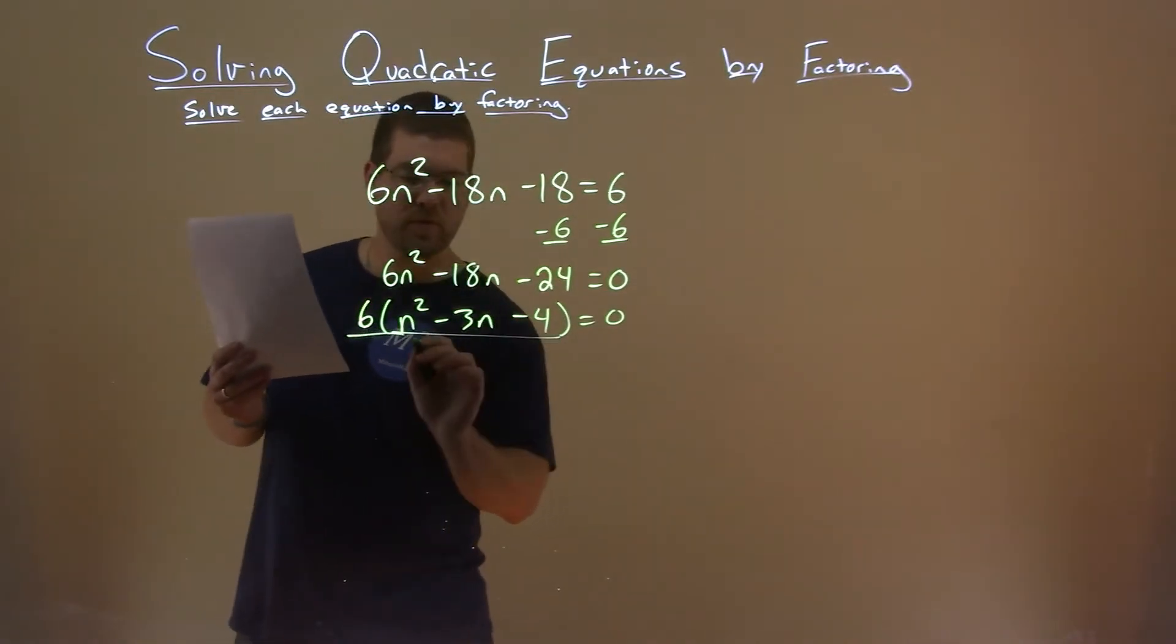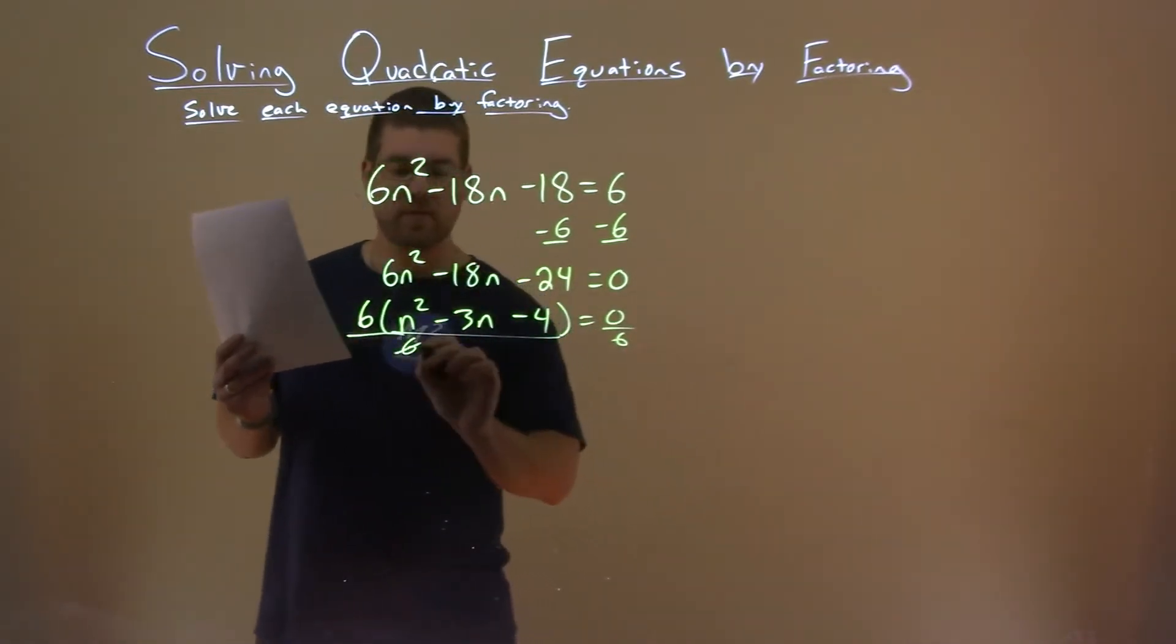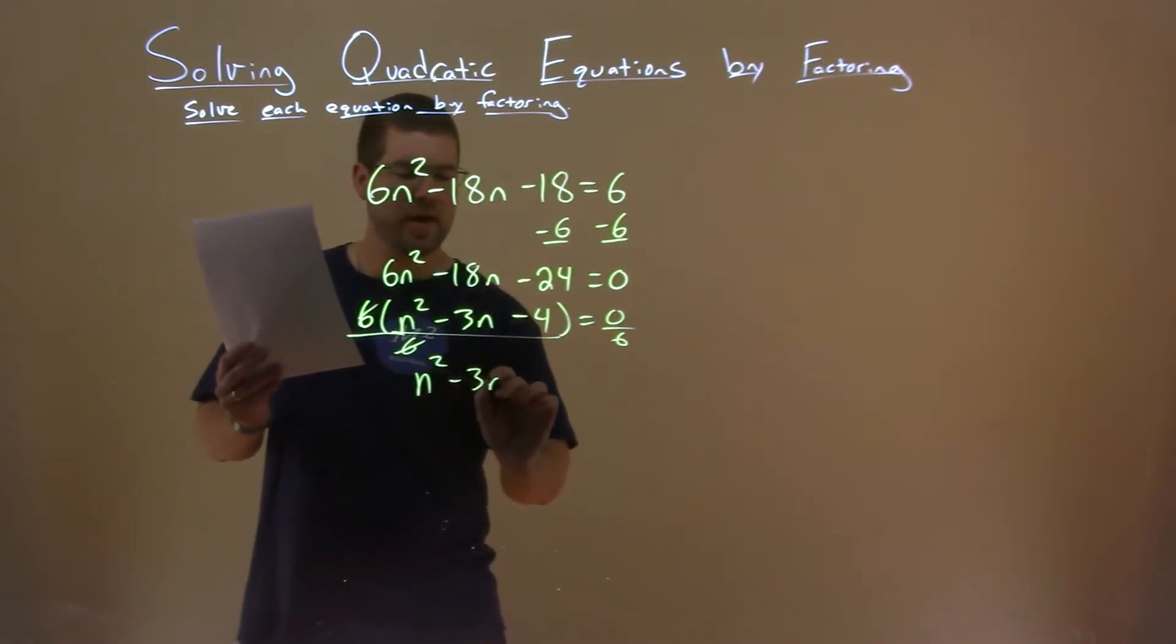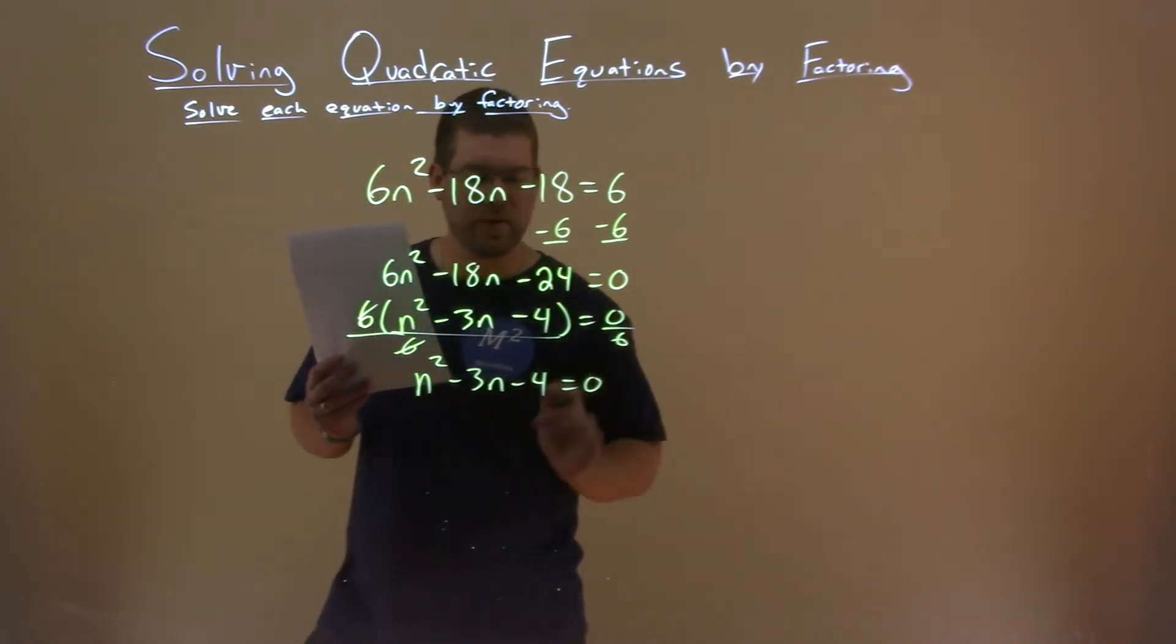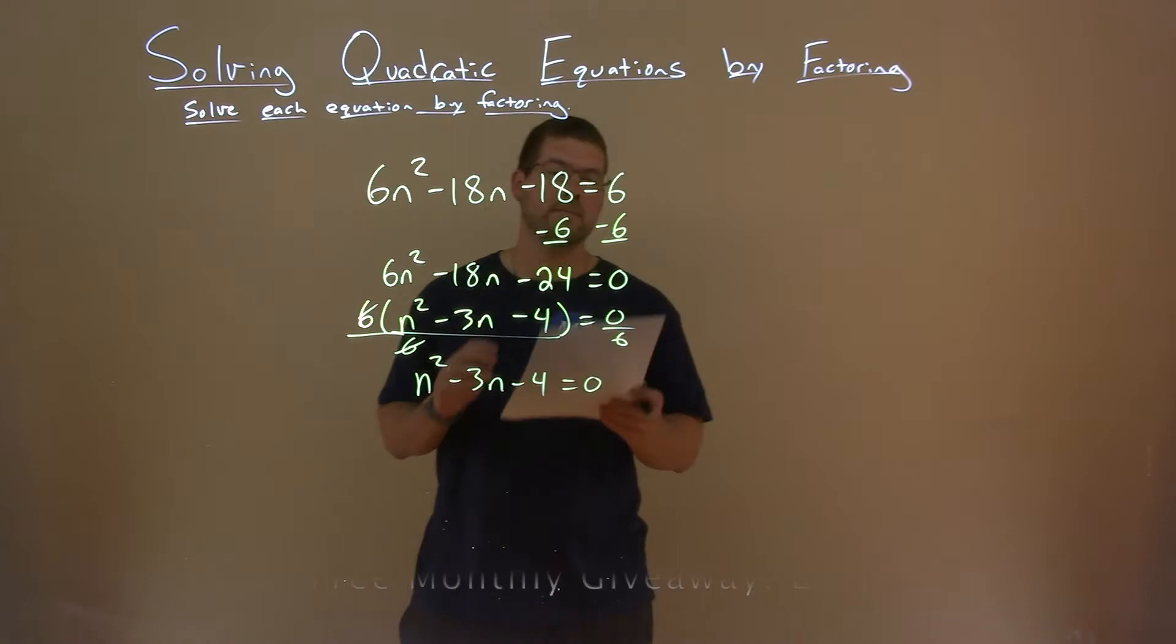Divide both sides by 6, the 6s cancel, and we have n squared minus 3n minus 4 equals 0. And that's a much easier problem to deal with.